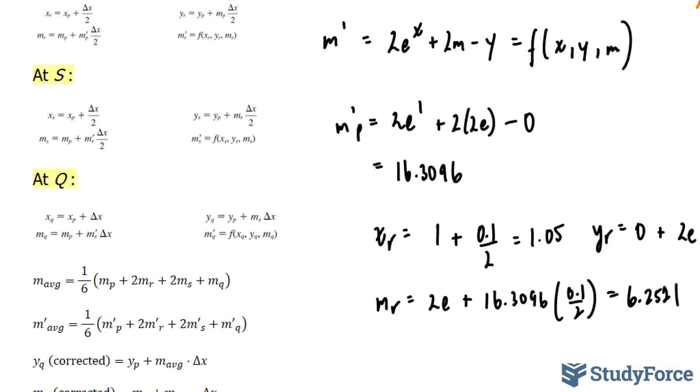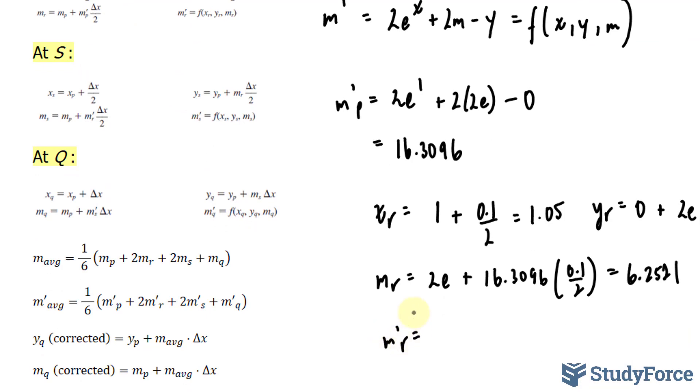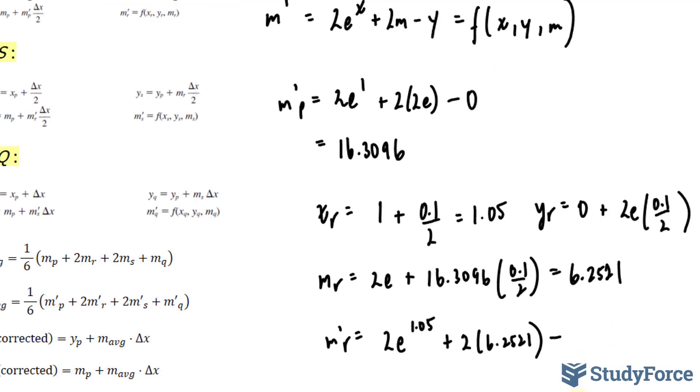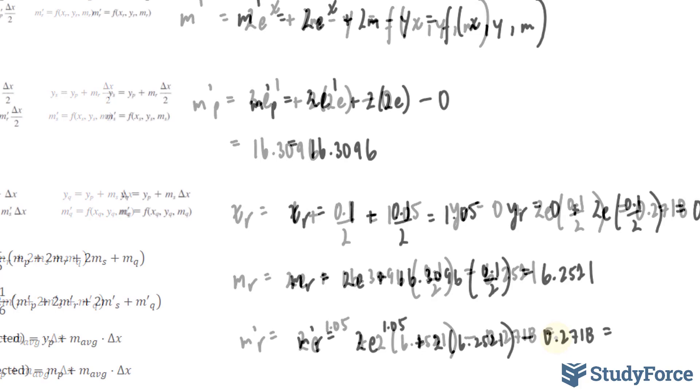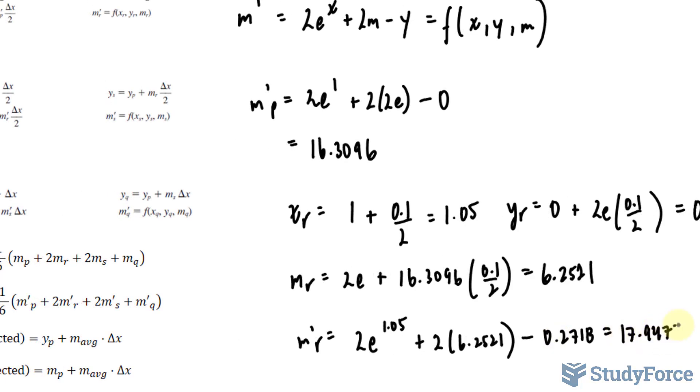And finally, m'_R. For that, we will use our formula, which we found up here, 2 times e to the power of this number, 1.05, plus 2 times m_R, which we have right here to be 6.2521, minus y_R, which was 0.2718. Putting all of that into your calculator, you should end up with 17.9477.